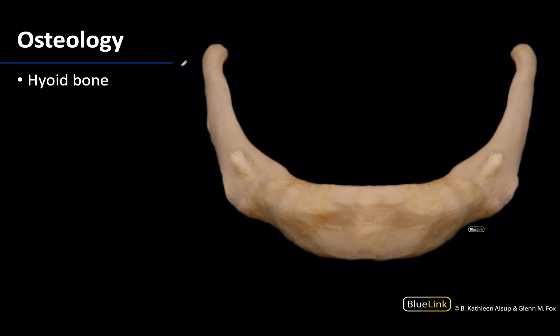Moving inferiorly we have the hyoid bone, which lies in the anterior part of the neck at about the C3 or cervical vertebra 3 level. It is located between the mandible and your thyroid cartilage — if you're feeling your anterior neck, the more prominent projection is your thyroid cartilage and in between that and the mandible is where your hyoid will sit. It is unique among bones for its isolation from other bones of the skeleton, sometimes referred to as free floating. It is a very unique-looking bone — very U-shaped and fairly thin.